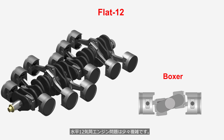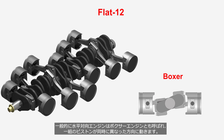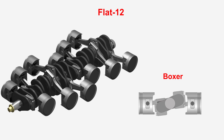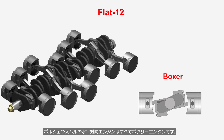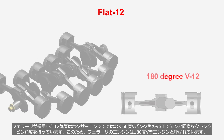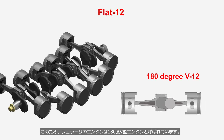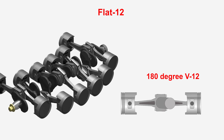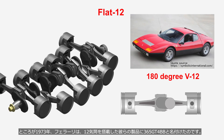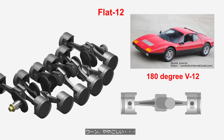The issue of a flat-12 engine is a bit complex. Generally, a flat engine is also known as a boxer engine, where a pair of pistons move simultaneously in opposite directions. The flat engines used by Porsche and Subaru are all boxer engines. Ferrari's flat-12 engine is not a boxer engine but rather has a similar crankshaft configuration as a V-6 engine, so Ferrari's engine is referred to as a 180-degree V-12 engine. However, in 1973, Ferrari named their product the 365 GT4 BB, where BB stands for Berlinetta Boxer.